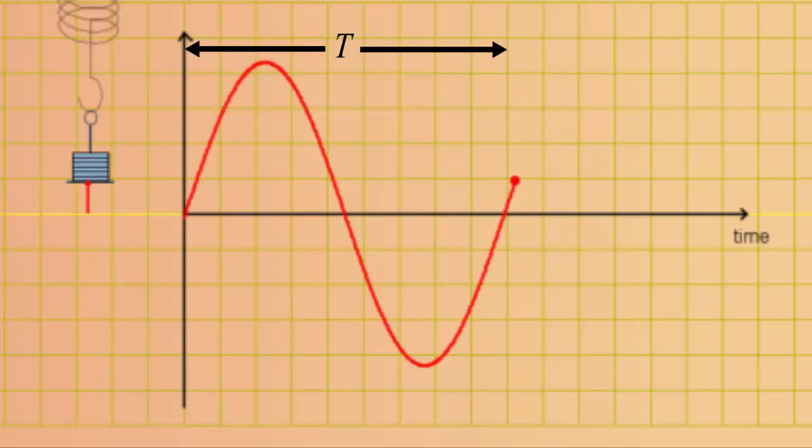Another measurement of oscillation is the frequency of the oscillation. The frequency, F, is the number of cycles completed within one second. Frequency is generally expressed in units of hertz. So an oscillation of 5 cycles per second has a frequency of 5 hertz.